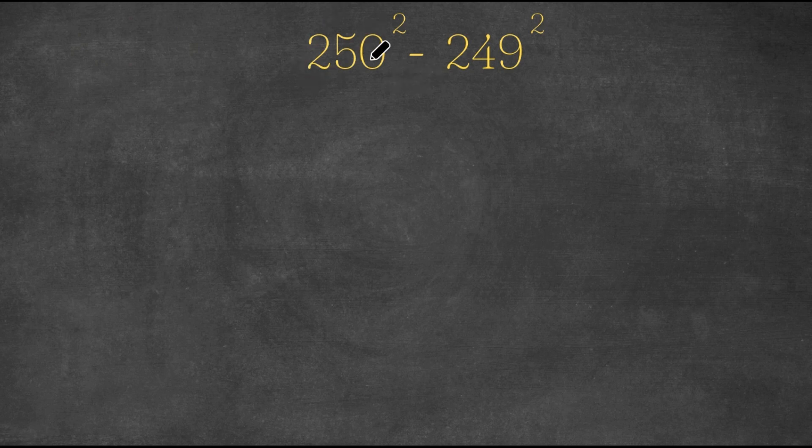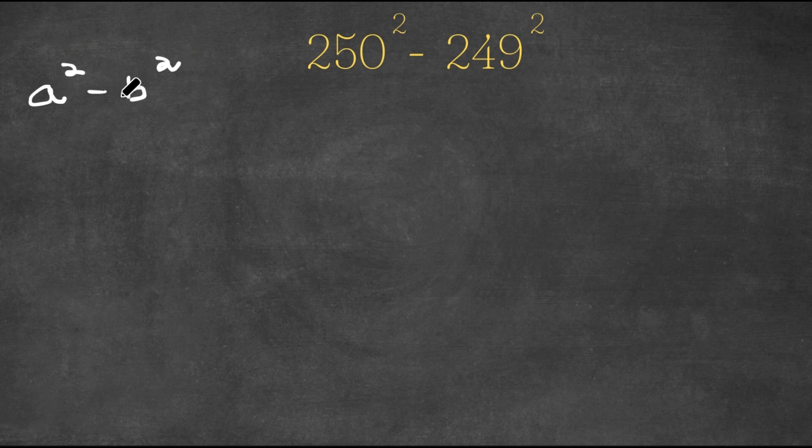So we have 250 squared minus 249 squared. Now in algebra, if we have something in the form a squared minus b squared, this can be written as